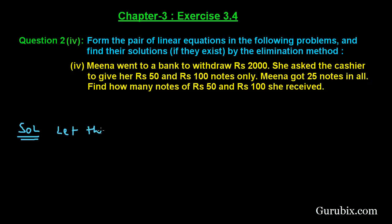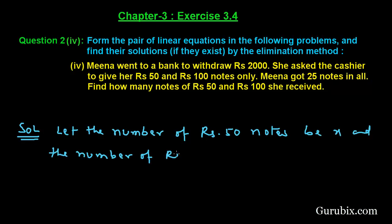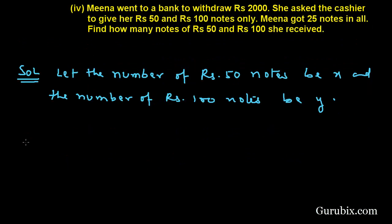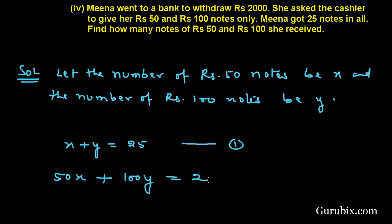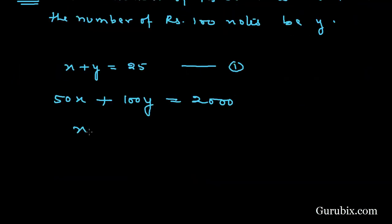Let the number of rupees 50 notes be x and the number of rupees 100 notes be y. We are given that Mina got 25 notes in all, so equation 1 is: x plus y equals 25. Since Mina withdrew rupees 2000, the total amount gives equation 2: 50x plus 100y equals 2000. Dividing both sides by 50, we get x plus 2y equals 40.